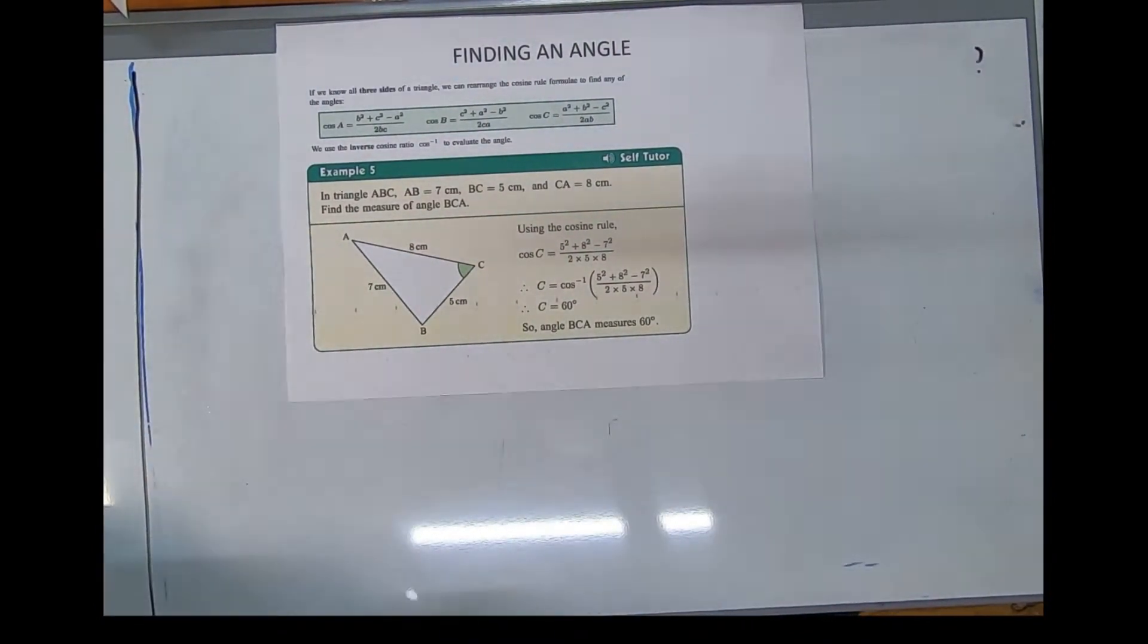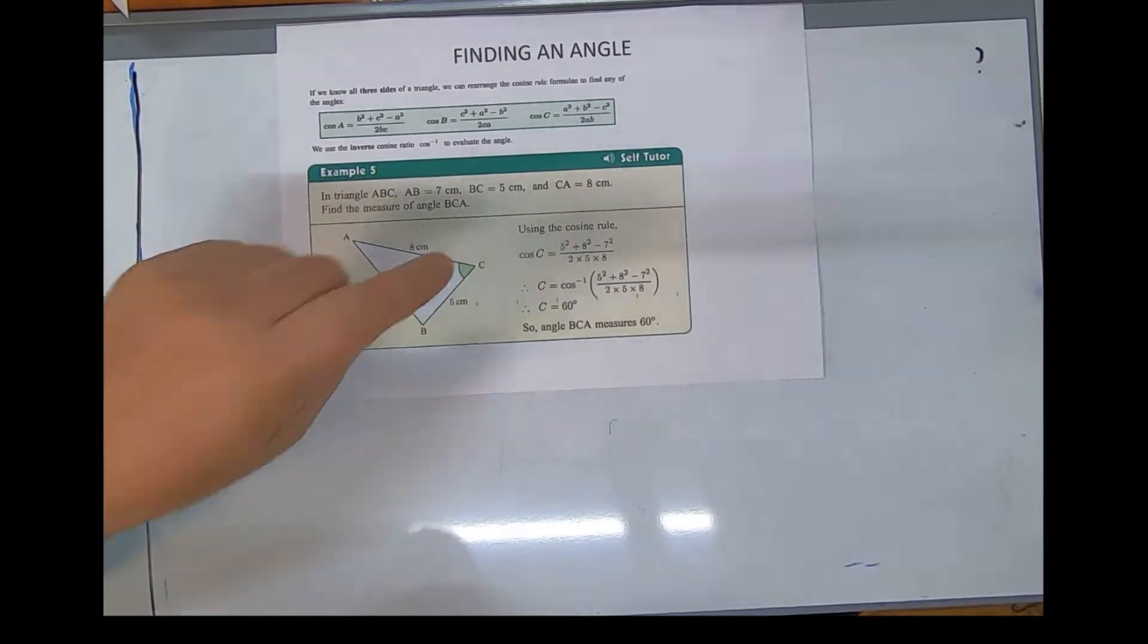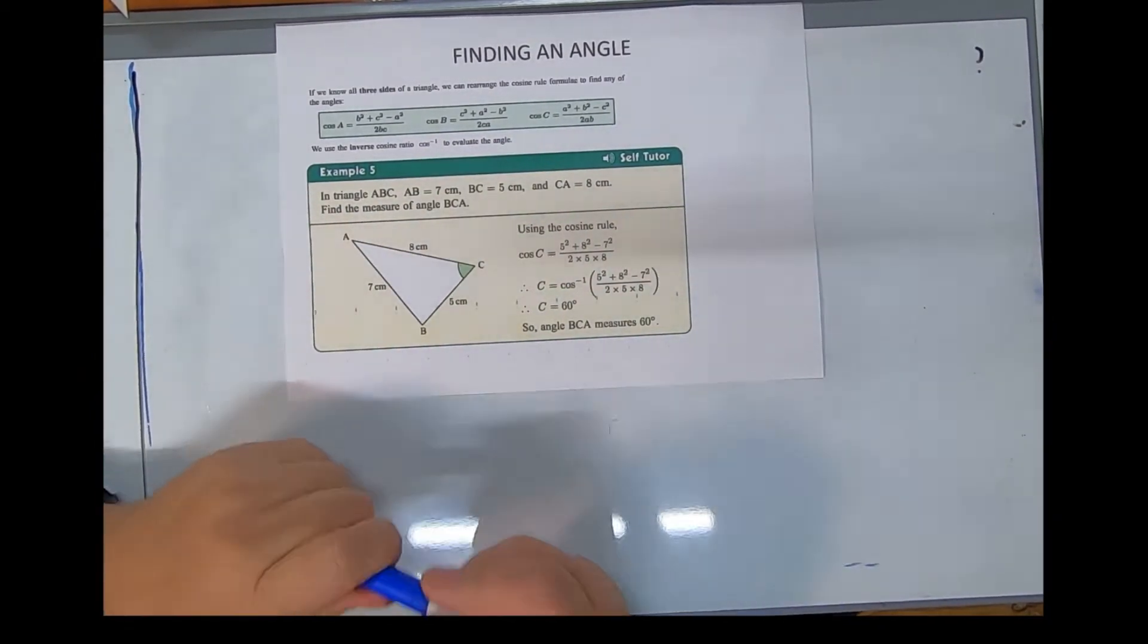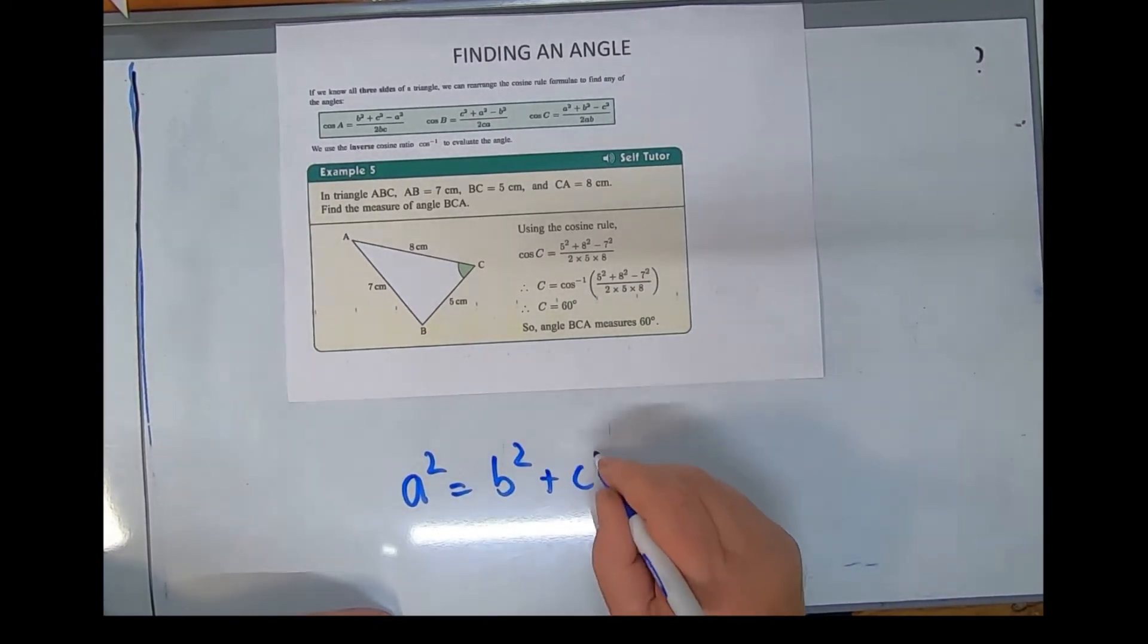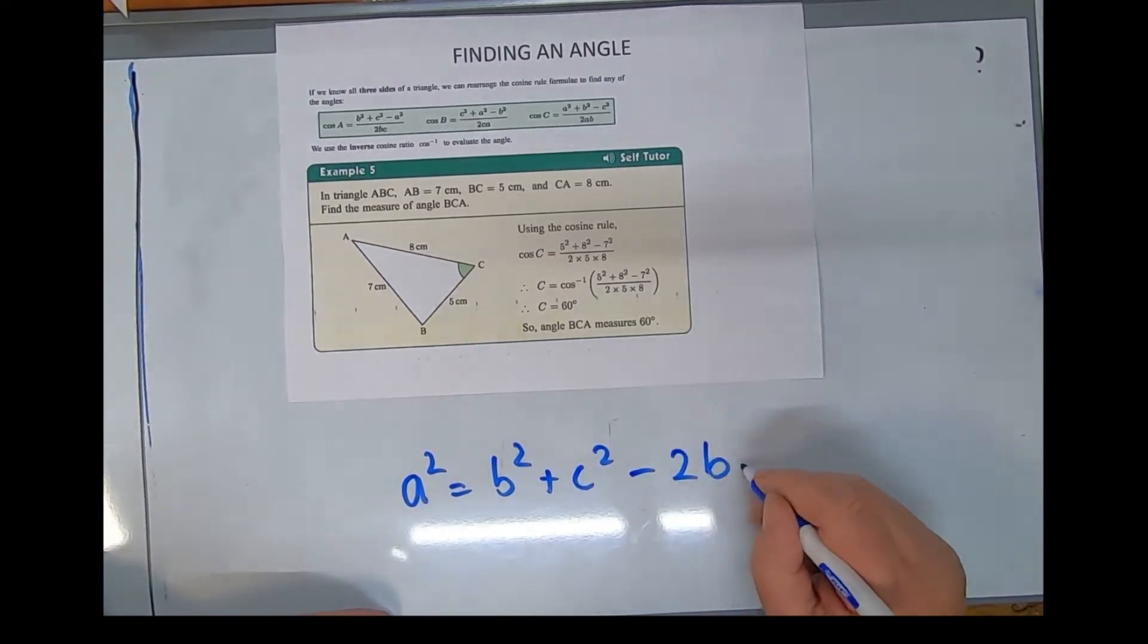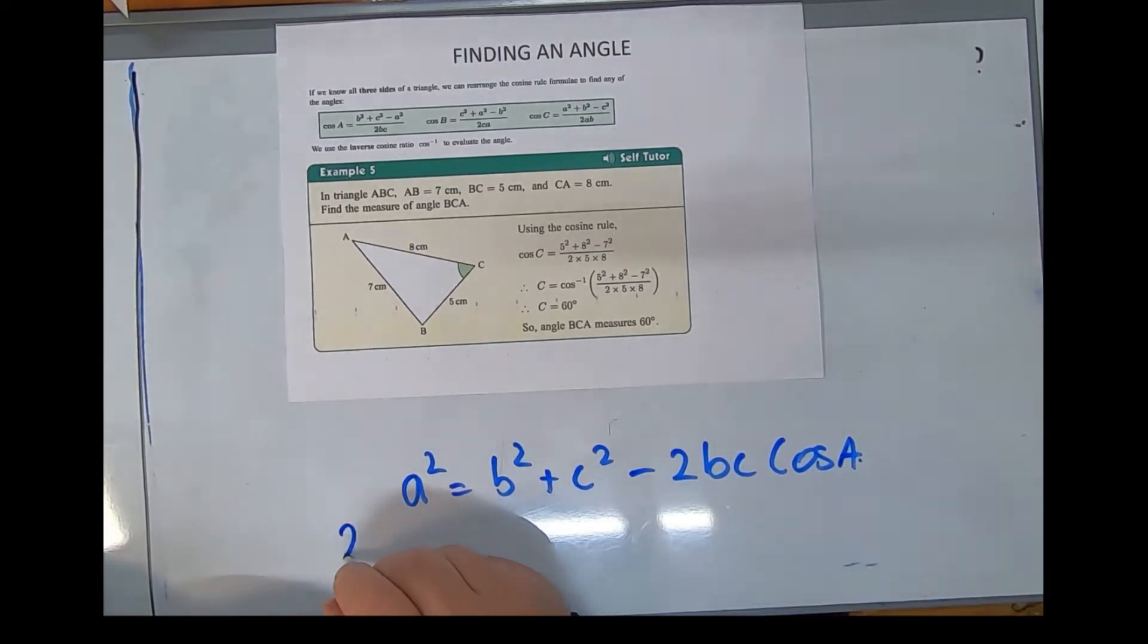The pen moves faster than the eye. So once I've done here, I do believe I could move this part over here to 2BC.